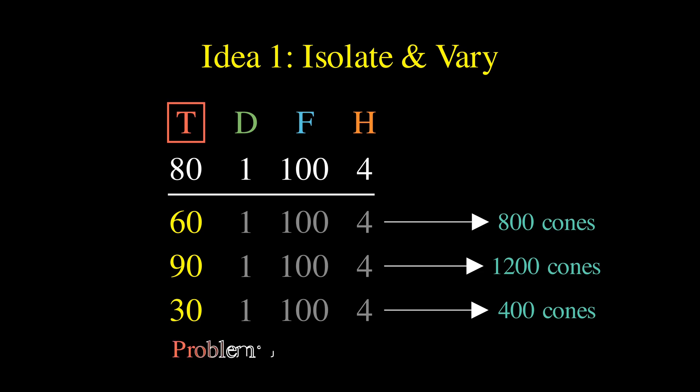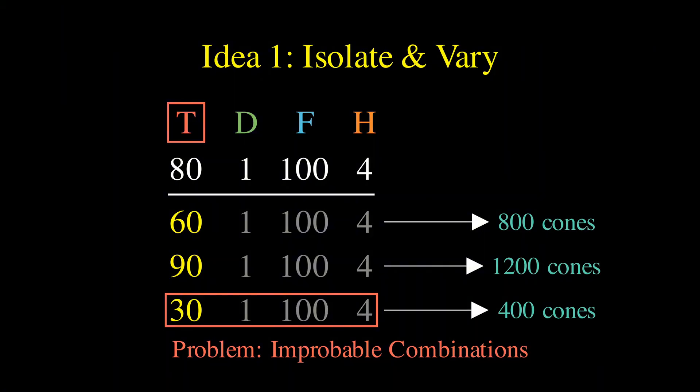While simple, this has a flaw. It creates Frankenstein samples, combinations of feature values that might never exist in the real world, like freezing temperatures on a day with peak summer flight schedules.